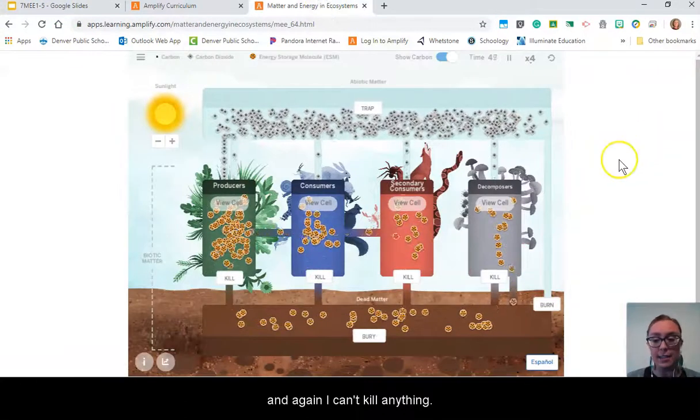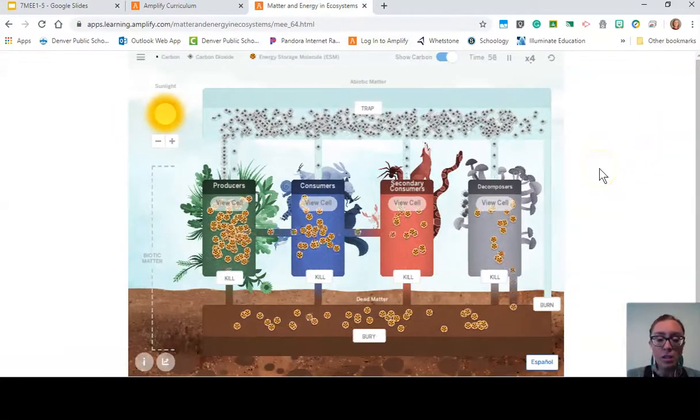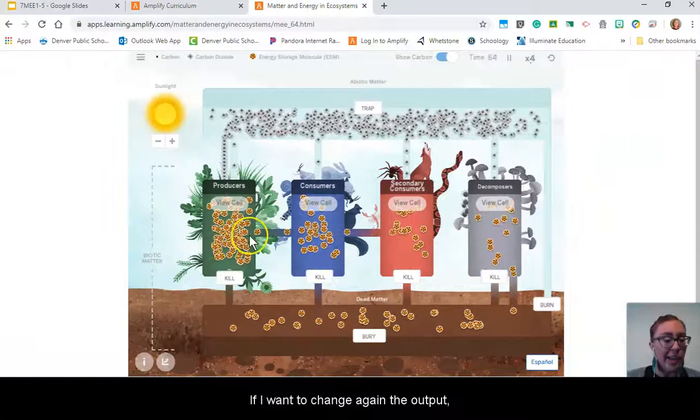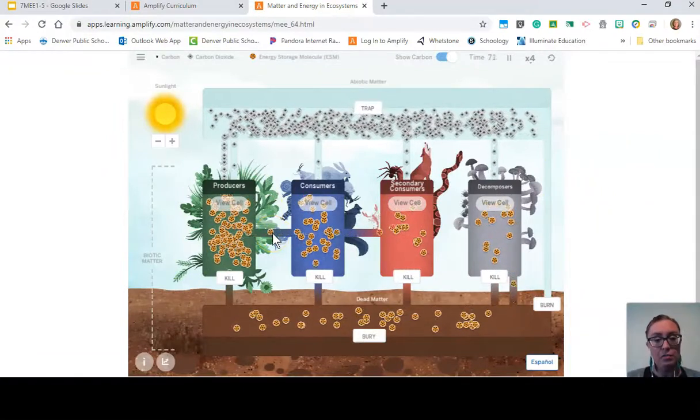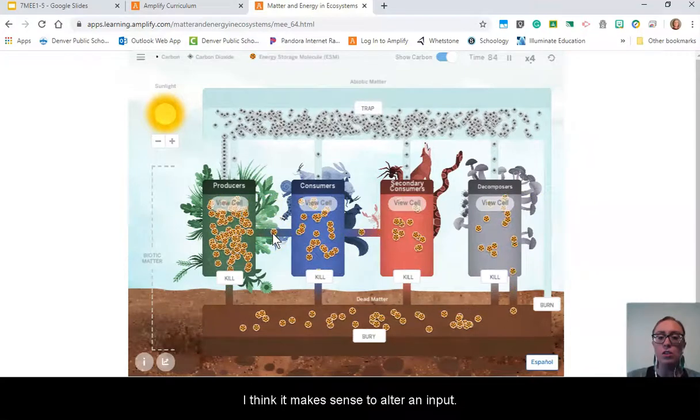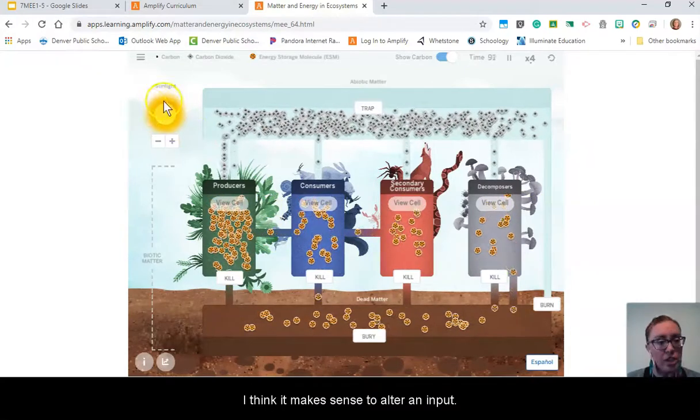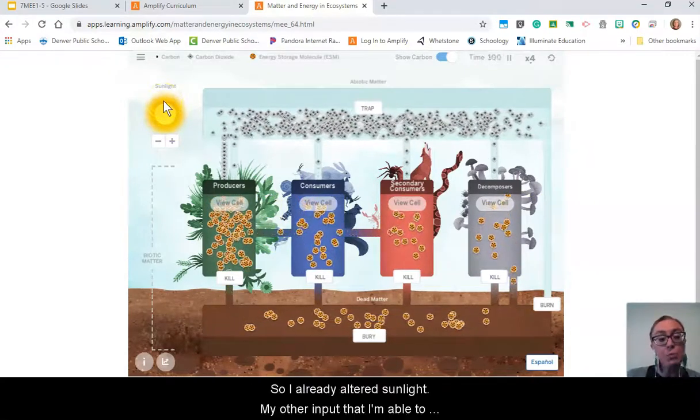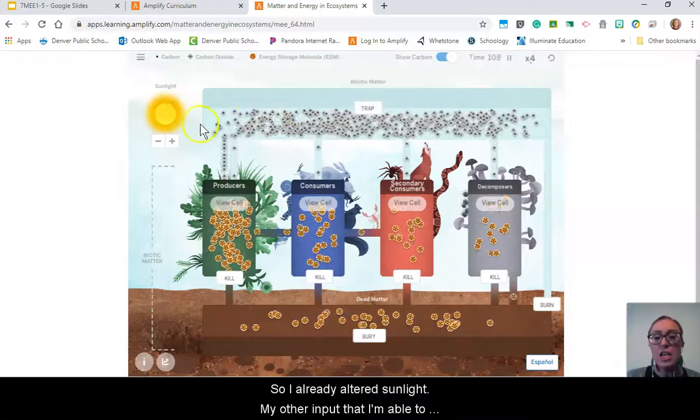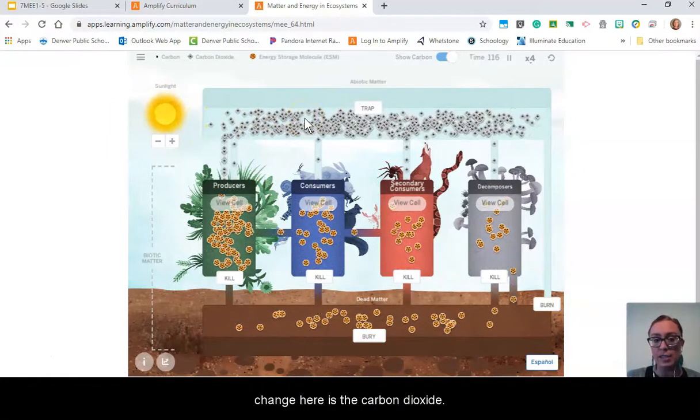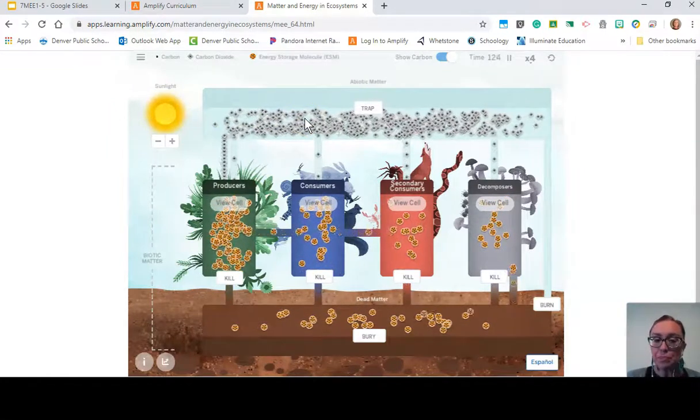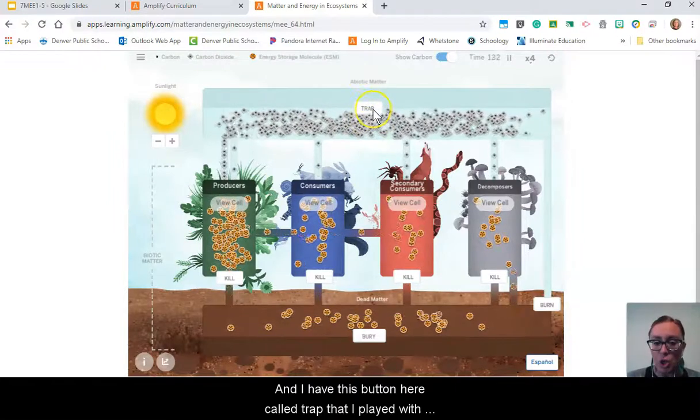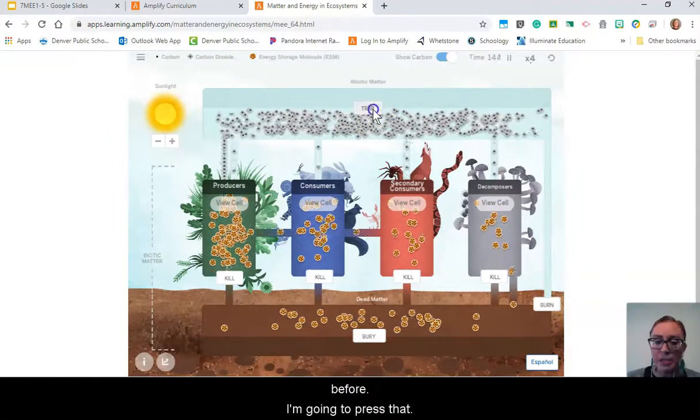Again, I can't kill anything. If I want to change the output, I think it makes sense to alter an input. I already altered sunlight. My other input that I'm able to change here is carbon dioxide. I have this button here called trap that I played with before. I'm going to press that.